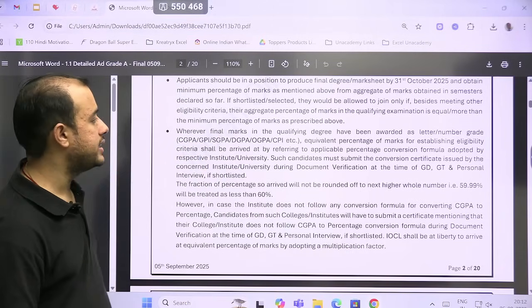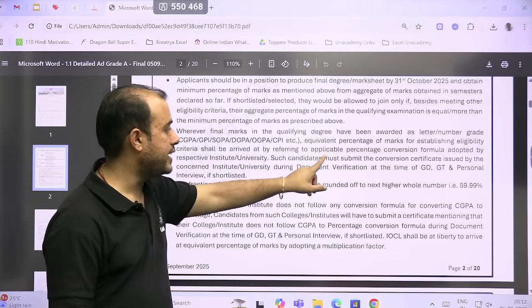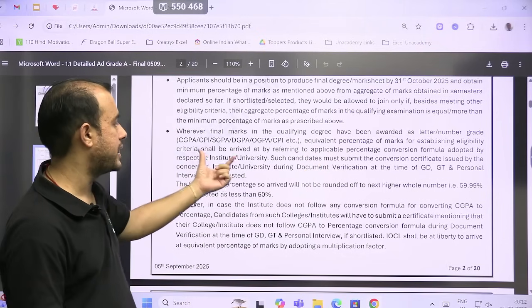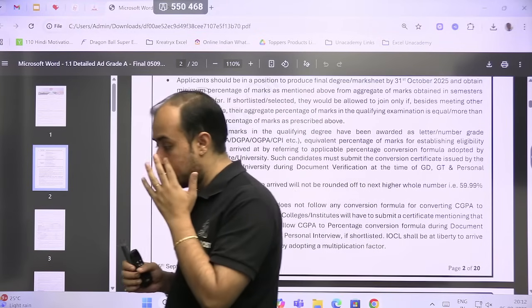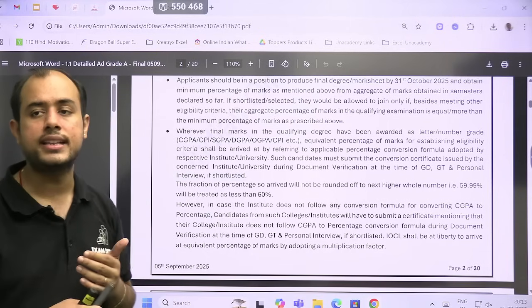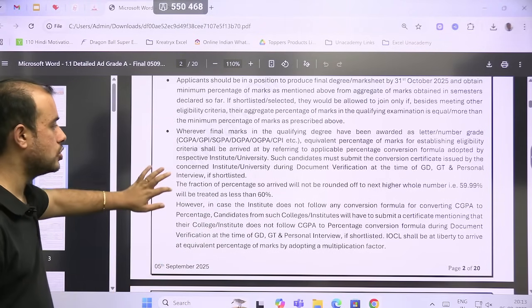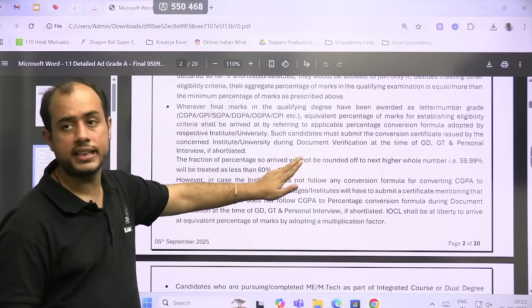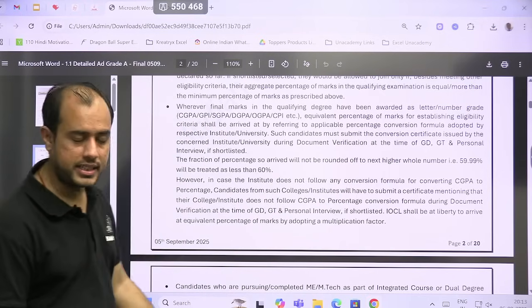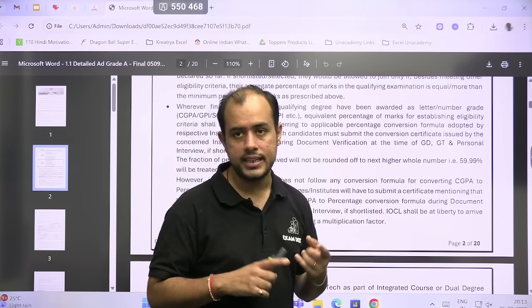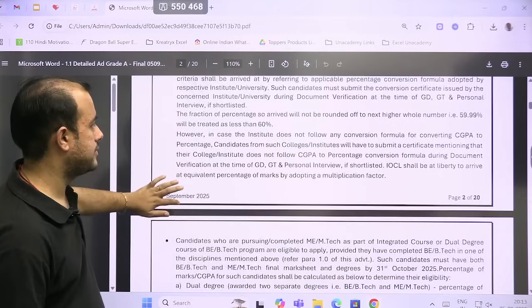Above the minimum percentage your aggregate should be—if shortlisted or selected, you would be allowed to join only if, besides meeting other eligibility criteria, their aggregate percentage is more than the minimum percentage. Your aggregate should be more than minimum, then only you can join. Now, whatever final marks in the degree have been awarded, equivalent percentage establishing eligibility criteria shall be arrived at referring to applicable percentage conversion formula by respective university.